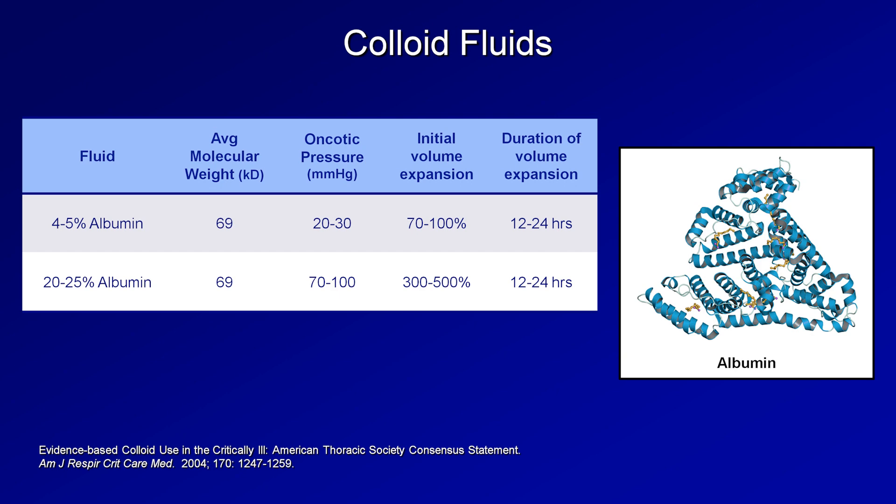Instead, common indications for 25% albumin include giving during large volume paracentesis to prevent electrolyte abnormalities from abrupt fluid shifts, and as part of the treatment protocol for spontaneous bacterial peritonitis, where it is believed to prevent the development of hepatorenal syndrome.